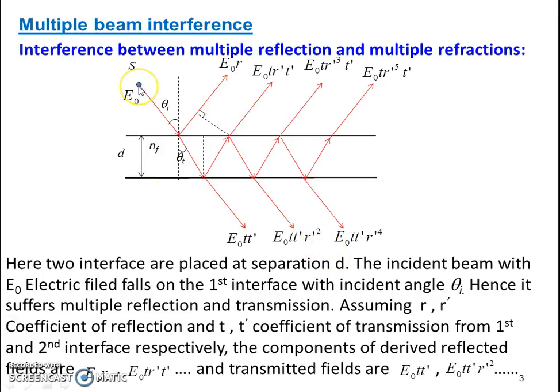We are considering a beam of electric field E0 from a source S falling with an angle of theta i on this surface. It gets reflected in this path and one part will get transmitted with angle of theta t.